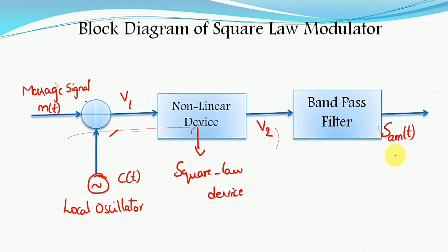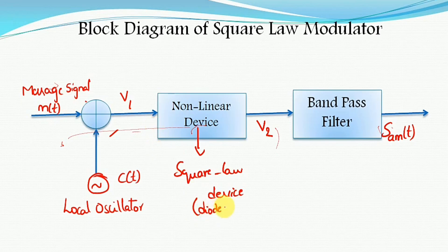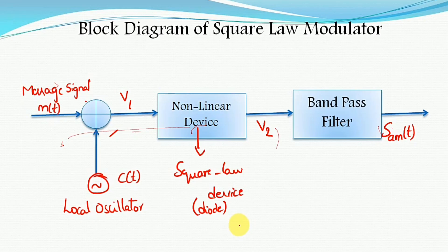Now let us understand why the square law device works here. The strength of the message signal is very low. We know the diode acts in the square law mode for low incoming voltages, while for high voltages it acts in a linear mode. Since both the message signal m(t) and the carrier signal from the local oscillator have low strength values, the diode operates in the square law characteristic region.